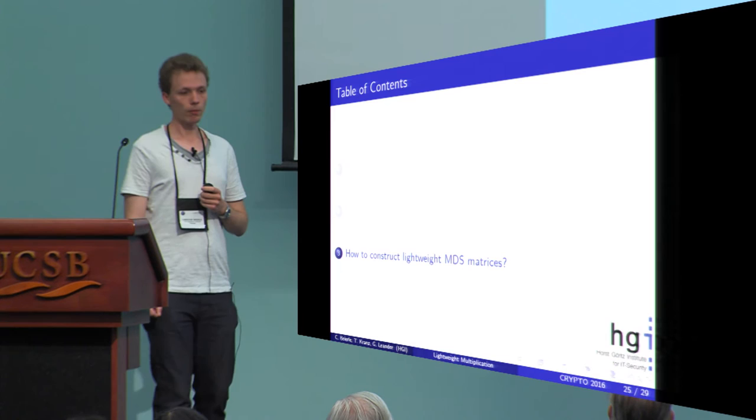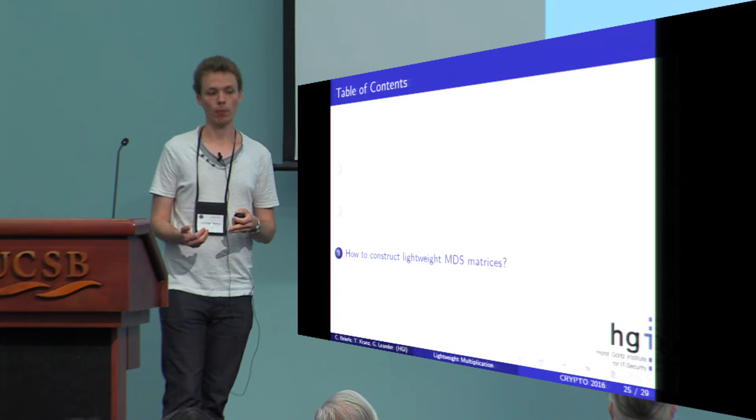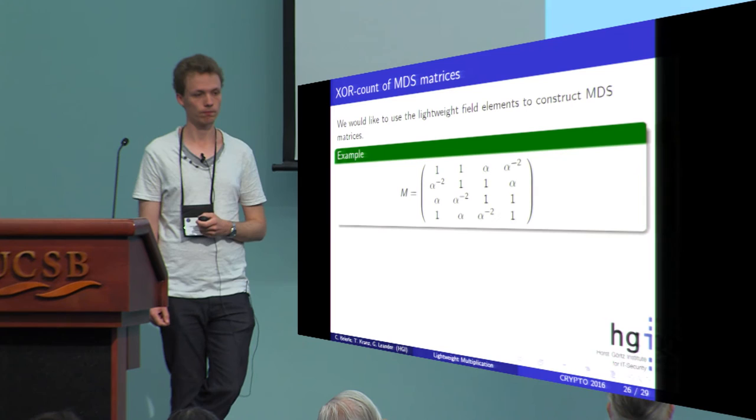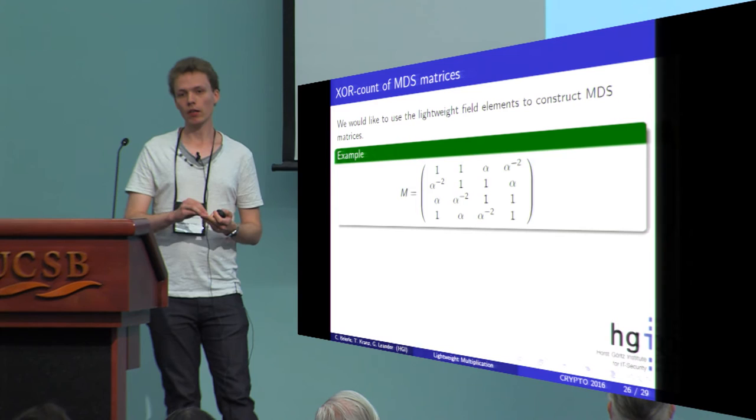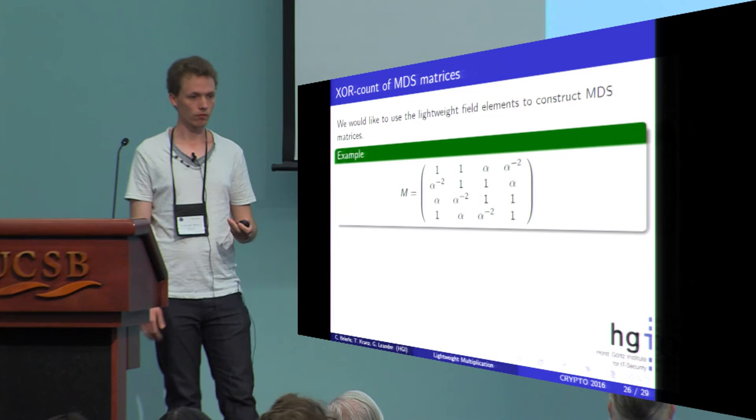Now let me come to our next question: how to use the knowledge of the lightweight field elements to construct lightweight MDS matrices. Let me come back to the example. In this example we have a generic element alpha and what we want to do is we want to replace this generic element by elements with the lightest XOR count in order to reduce the XOR count of this MDS matrix.